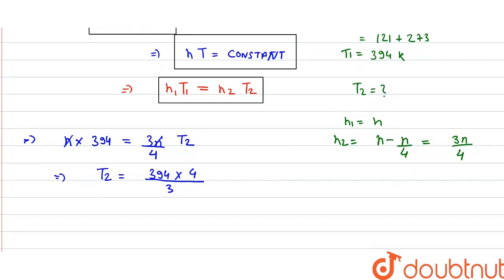So now we can simplify this and we will get the value of temperature T2 equal to 525.33 Kelvin.